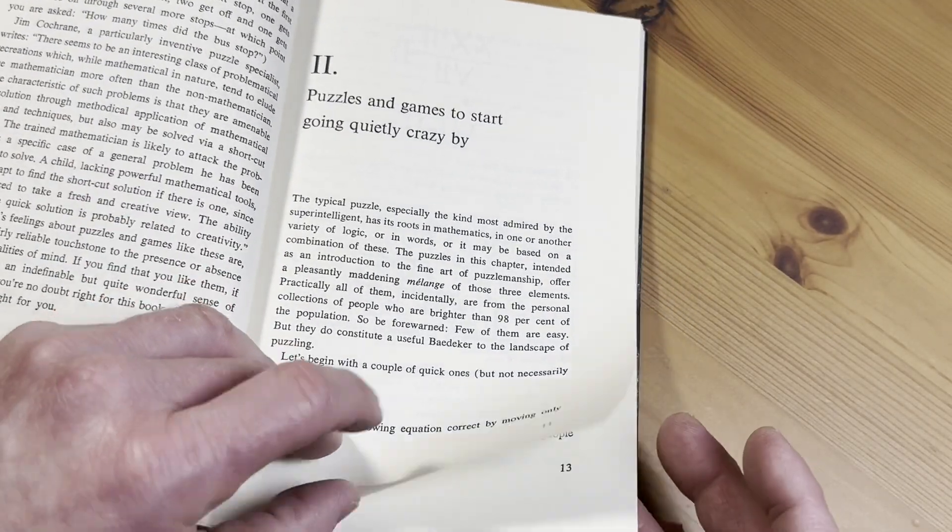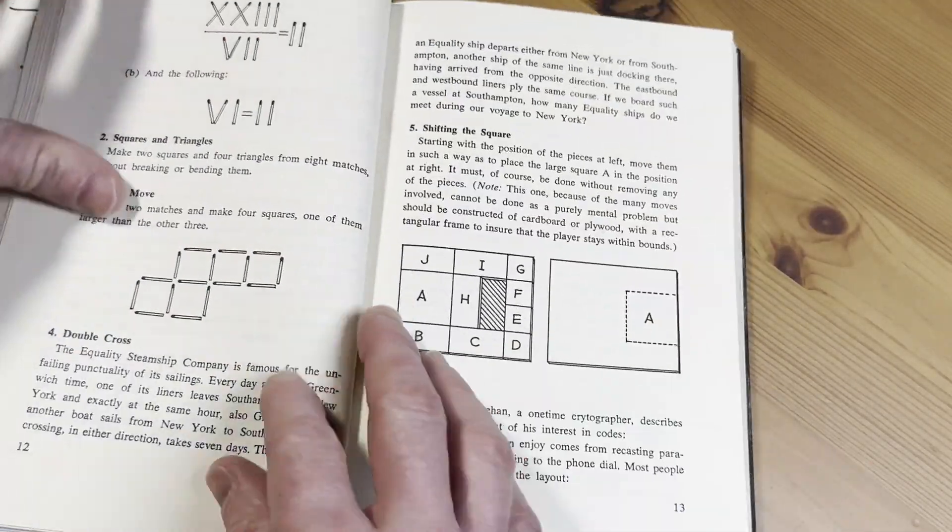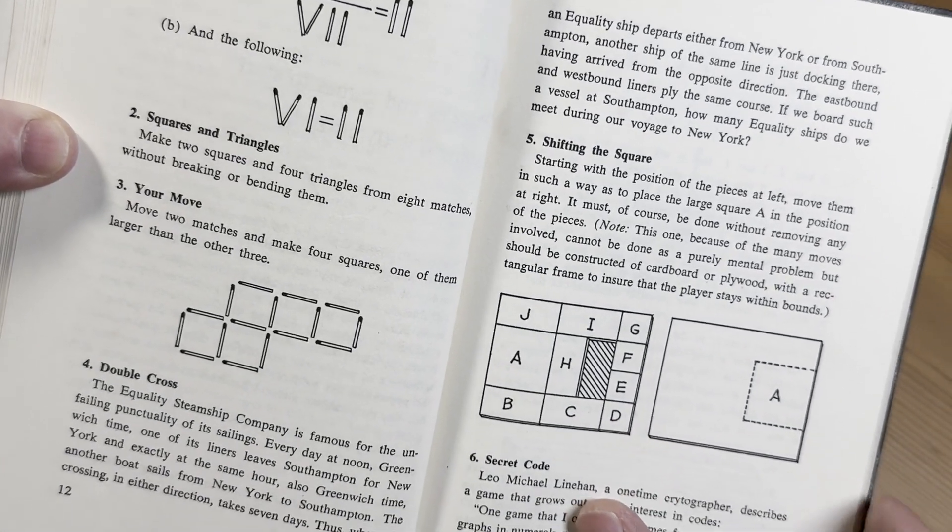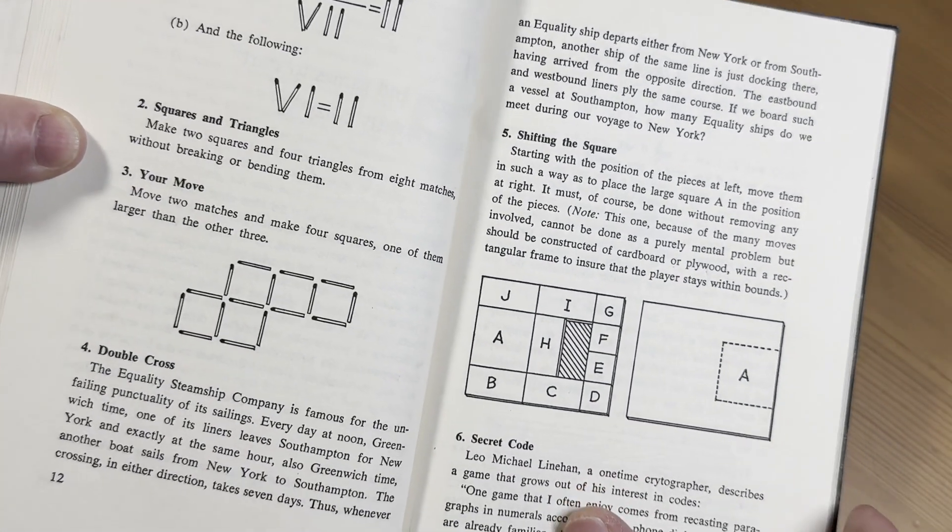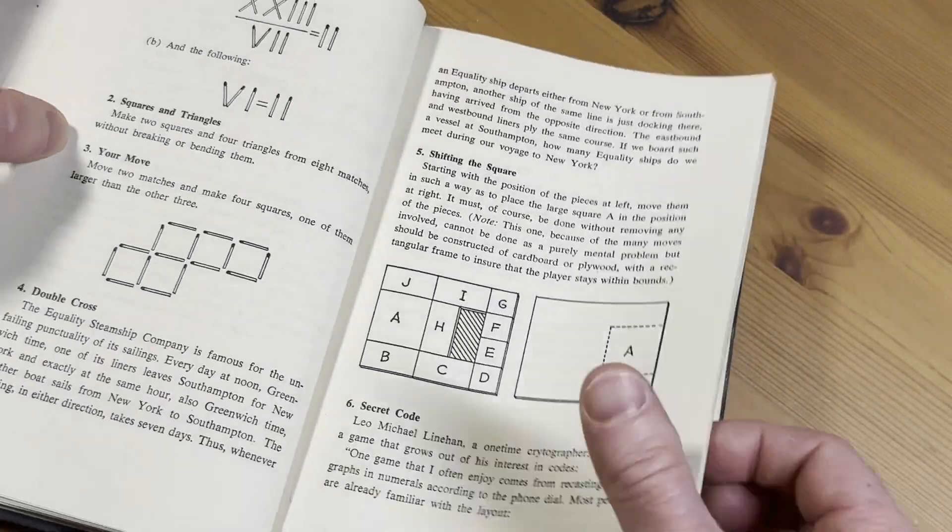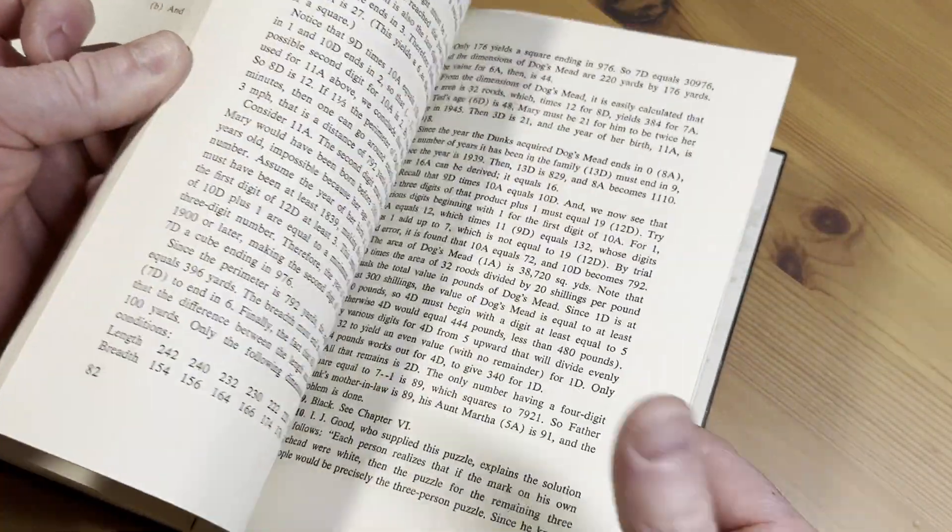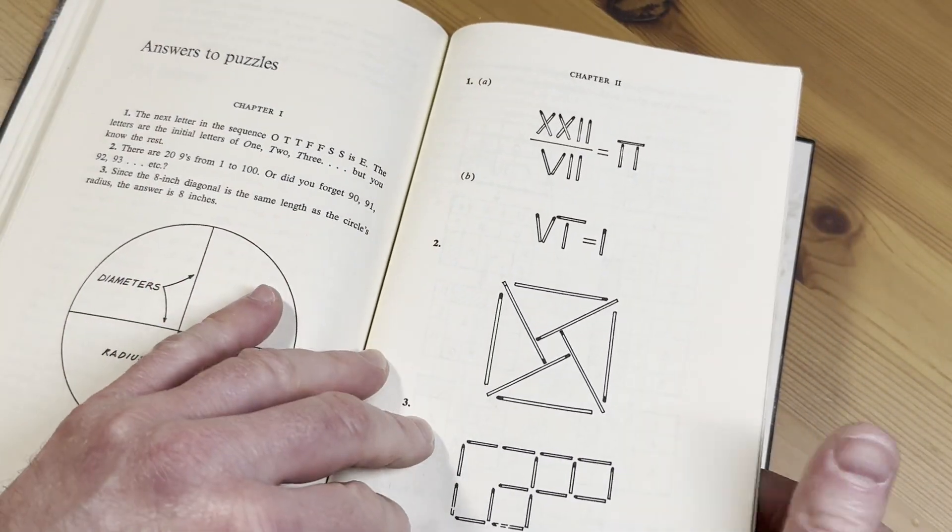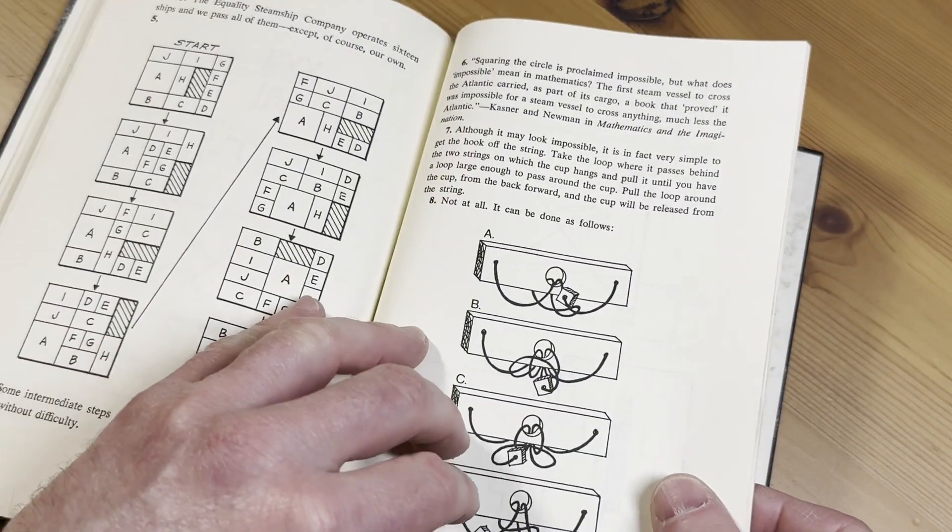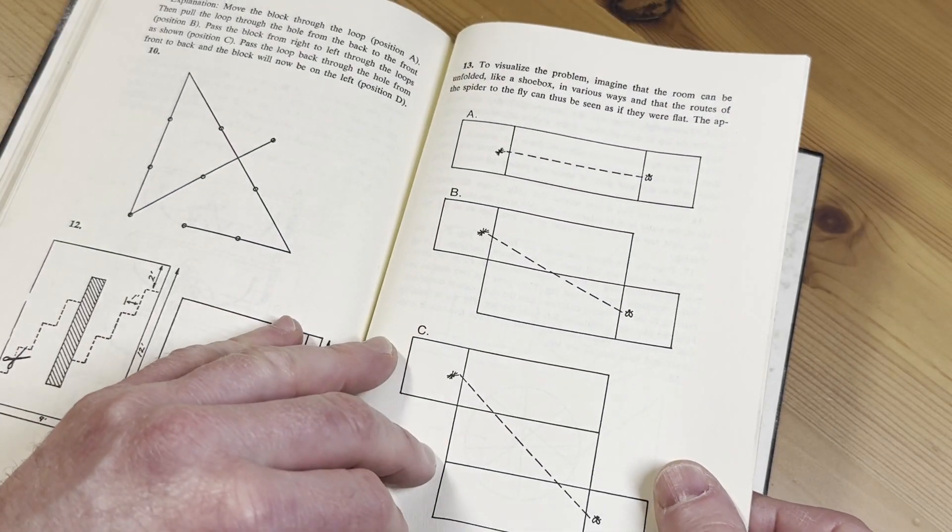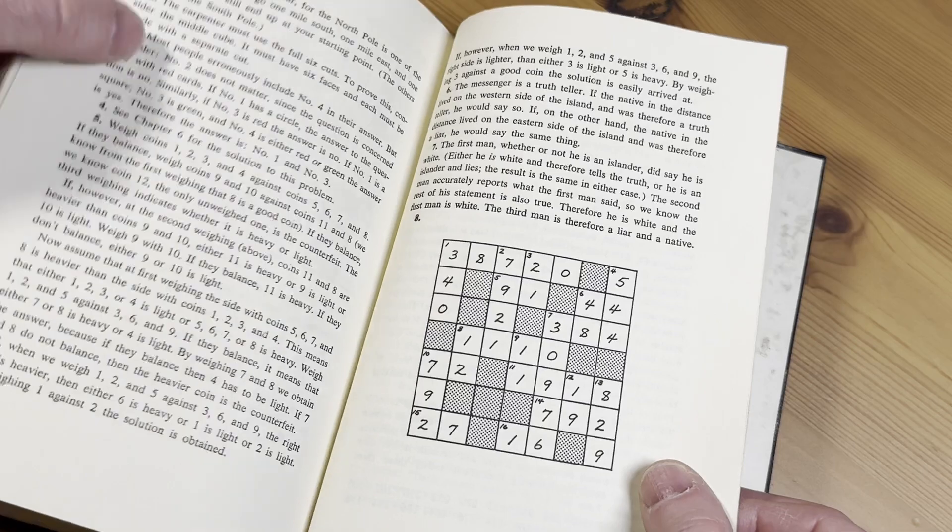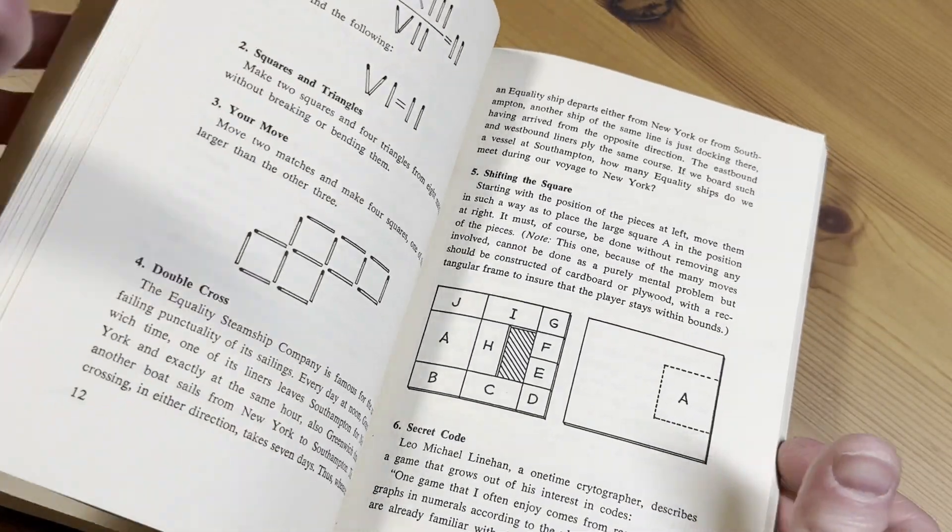So you have different puzzles and stuff. It's kind of an interesting book. Squares and Triangles. Make two squares and four triangles from eight matches without breaking or bending them. Okay, so there's your challenge. And this has answers in the back. Let's take a look there. Answers to puzzles. So here you have the answers to the puzzles. Cool, kind of an interesting book.